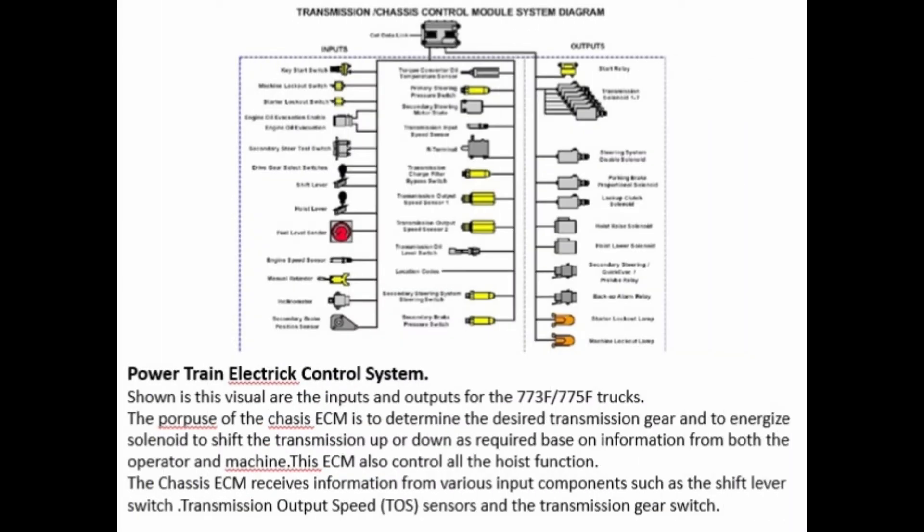Power train electric control system. Shown visually are the inputs and outputs for the 773F and 775F trucks. The purpose of the chassis ECM is to determine the desired transmission gear and to energize solenoids to shift the transmission up or down as required, based on information from both the operator and machine. This ECM also controls all the hoist functions. The chassis ECM receives information from various input components such as the shift lever switch, transmission output speed (TOS) sensor, and the transmission gear switch.